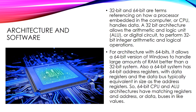Now let's talk about architecture and software. The terms 32-bit and 64-bit refer to how a processor handles data. A 32-bit architecture allows the arithmetic and logic unit — the ALU — to perform 32-bit integer arithmetic and logical operations. For 64-bit architecture, it allows a 64-bit version of Windows to handle large amounts of RAM better than a 32-bit system.